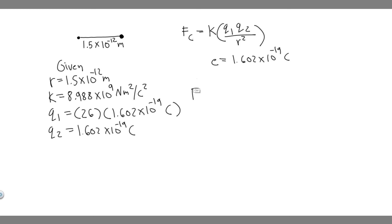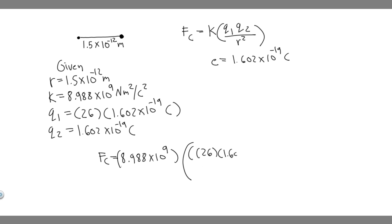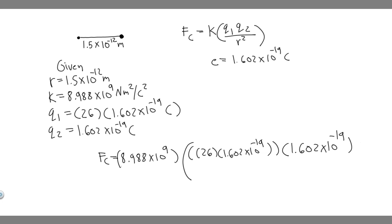Going ahead and plugging in: F sub c equals k, which is 8.988 times 10 to the 9 — the units will cancel out to newtons — then Q1 is 26 multiplied by 1.602 times 10 to the minus 19, multiplied by Q2, which is 1.602 times 10 to the minus 19, divided by the radius squared: 1.5 times 10 to the minus 12, squared. So we have k, Q1, Q2, and the radius squared.